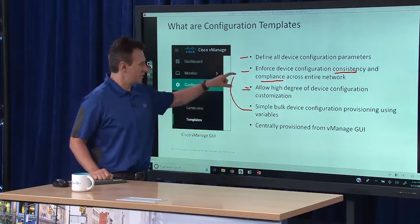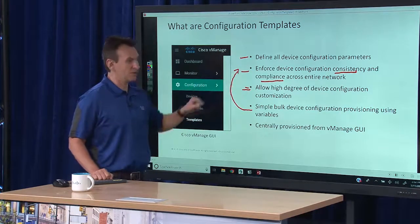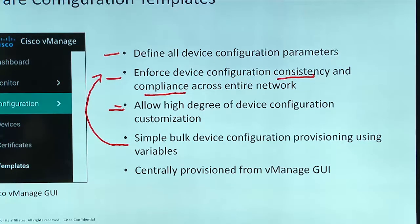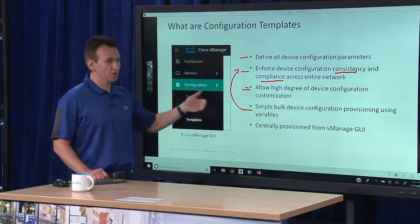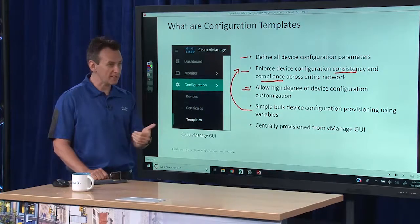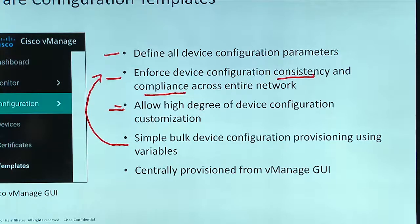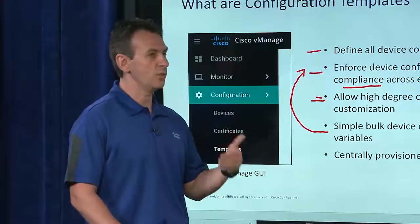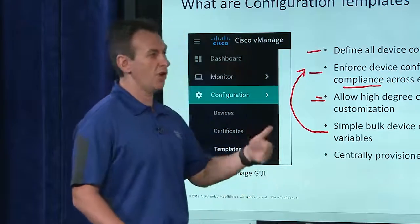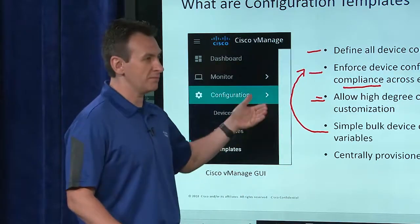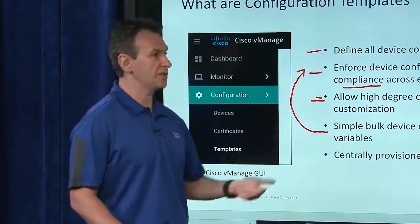That goes back to what we talked about as enforcing configuration consistency. Once you have those configuration templates applied or attached to dozens, hundreds, or sometimes thousands of devices, you want to make sure that changes are easily propagated across all of those devices. This bulk provisioning is not necessarily just the very first provisioning you're doing — it's also the operational efficiencies that come with deploying in production and making changes as you continue using the system.